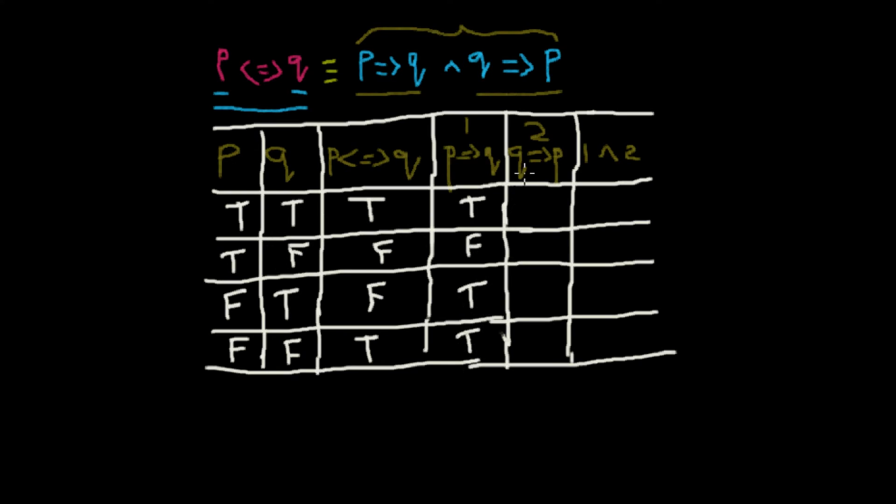Similarly, the only time when Q implies P is false is when Q is true and P is false. This entry would be false and the rest of them would be true. All other entries are true except this one when Q is true and P is false.